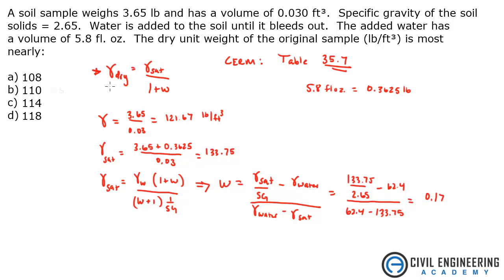Now all we need to do is plug it into this original equation to get our dry density, which is going to be gamma sat over 1 plus water content. So that was 133.75 divided by 1 plus 0.17, and I get an answer of 114 pounds per cubic foot. Answer is C on this one.